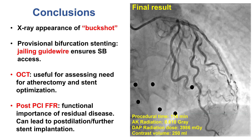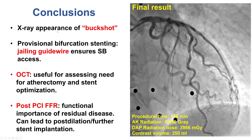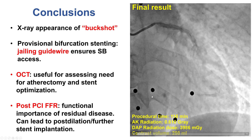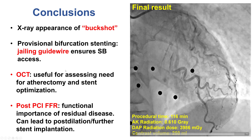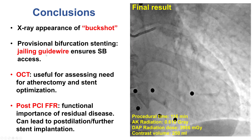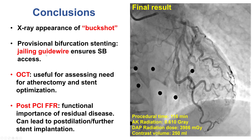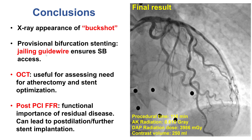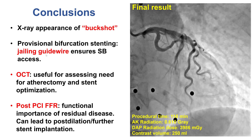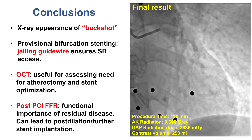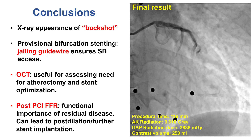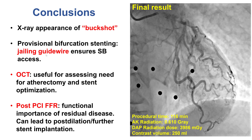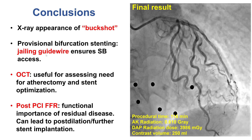There are several interesting points in this case. First is the angiographic appearance of buckshot — the little metal pellets representing previous shotgun injury. Second is the use of a jailed guide wire in the side branch during provisional stenting. The jailed guide wire provides a safety net if flow is compromised. There is a small risk of guide wire entrapment, but this can be minimized by using a polymer-jacketed guide wire. If there is resistance pulling the wire back, no force should be applied; instead, a small balloon or microcatheter should be advanced to help free it.